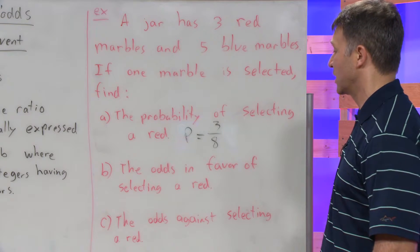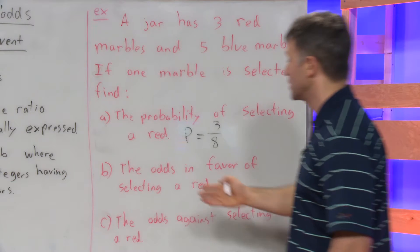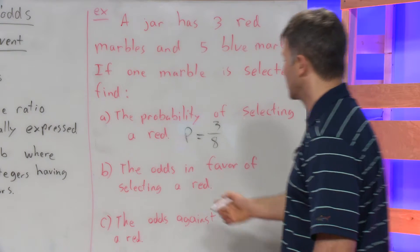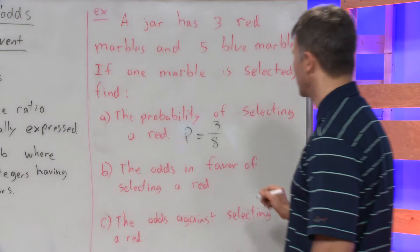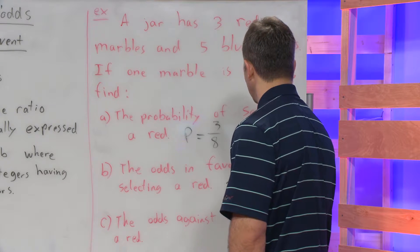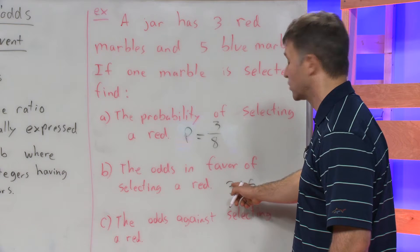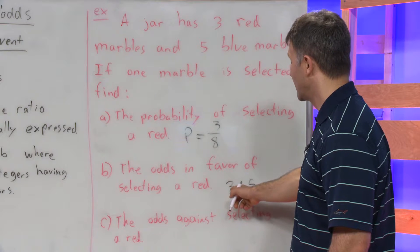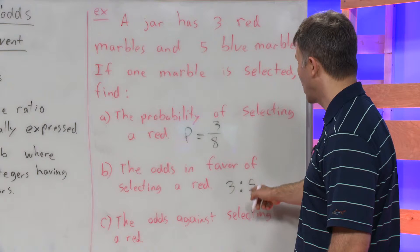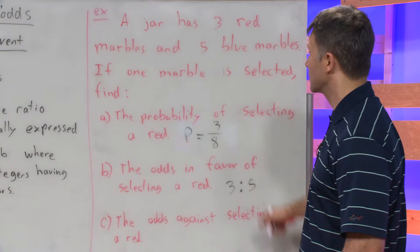Part b: the odds in favor of selecting a red. We have a video on how to find odds in favor — this is here to compare and contrast odds in favor versus odds against. The odds in favor of selecting a red are going to be three to five. The first integer is the number of ways event A can occur, and the second is the number of ways event A complement can occur. There are three ways to get a red and five ways to get something that's not red, since there are five blue.